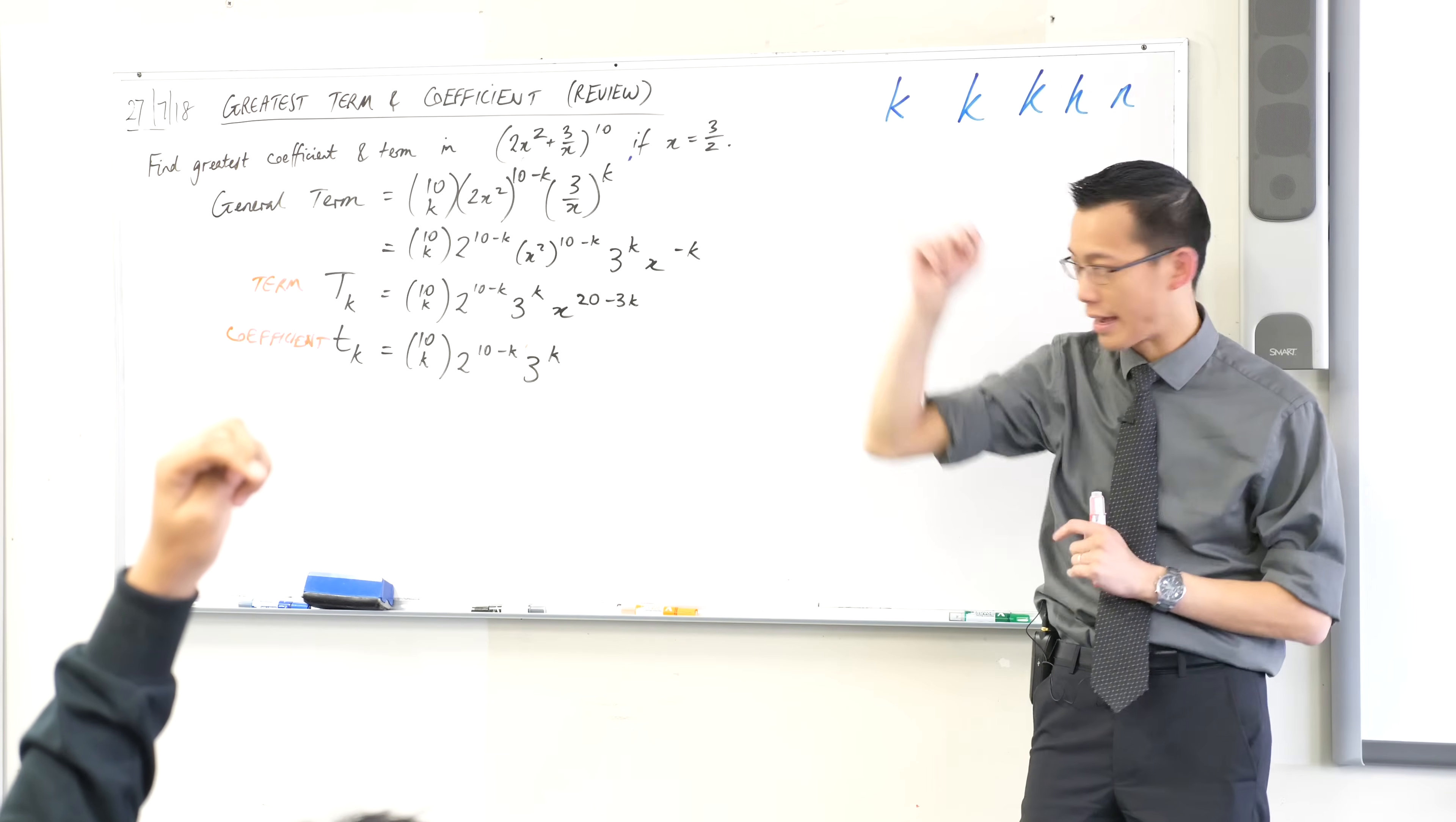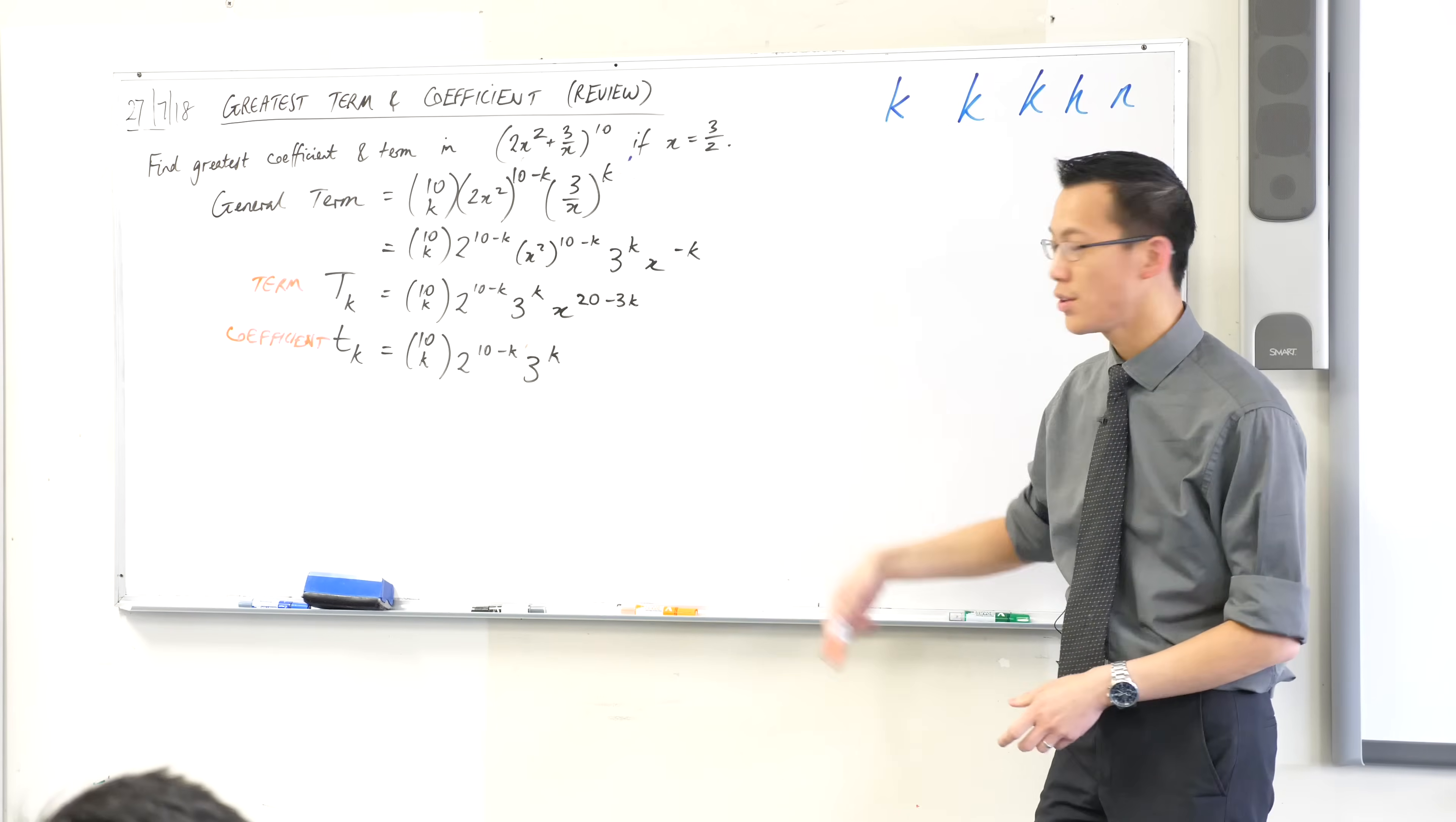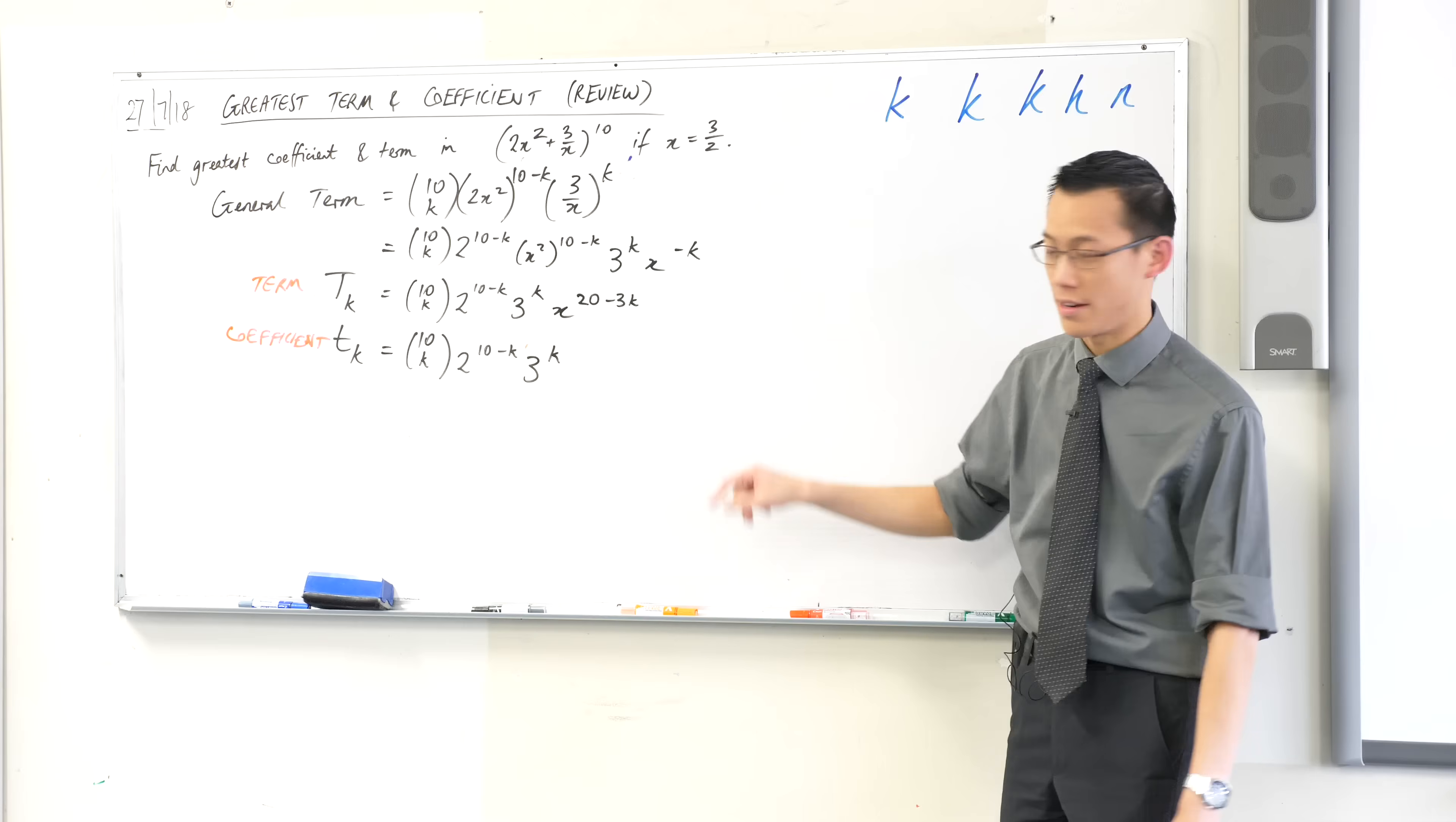So about half of you. Here's what I'm going to do. That half of you, off you go. The rest of you, let me start to walk you through. We'll begin with the coefficient just because it's simpler. There's less stuff flying around in there.